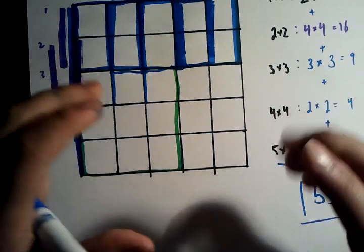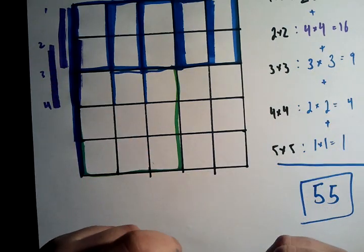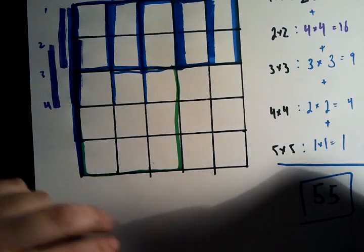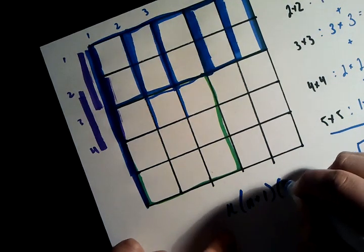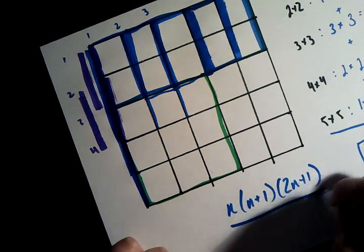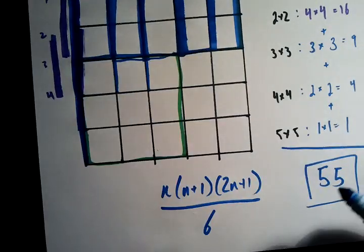And if you get a bigger grid, if it's a square, you can use the formula for the sum of squares. You know, n times n plus 1 times 2n plus 1 over 6, where n is the number of sides. So let's see if that works.